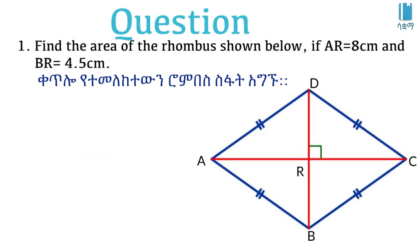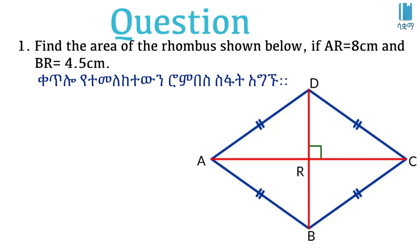Now let's try to find the area of the rhombus shown below. AR is a certain number of centimeters, and BR is 4.5 centimeters.